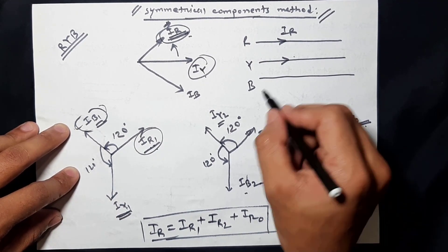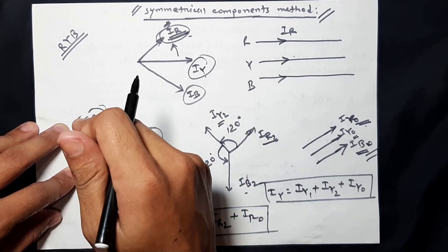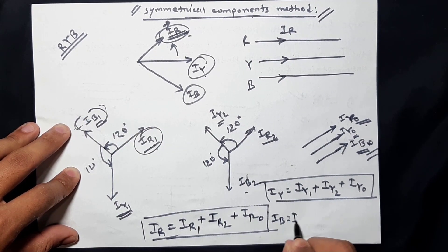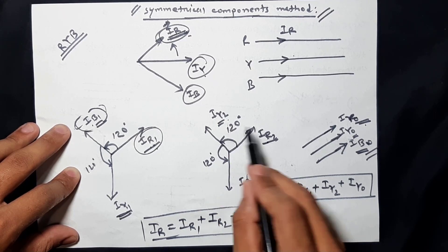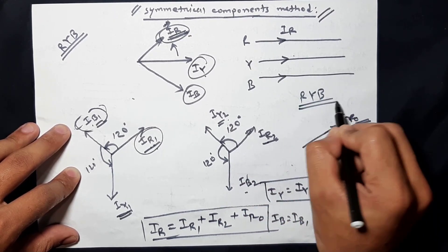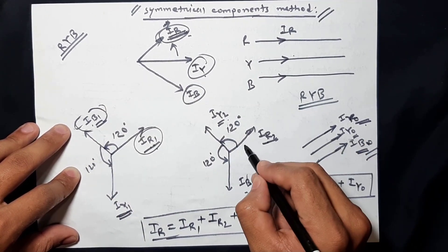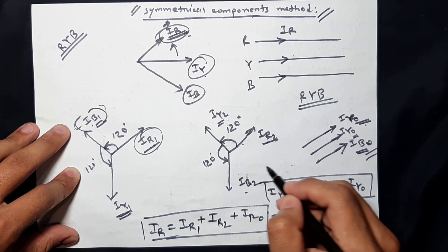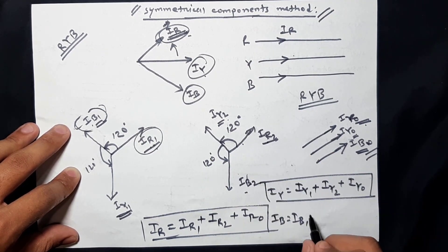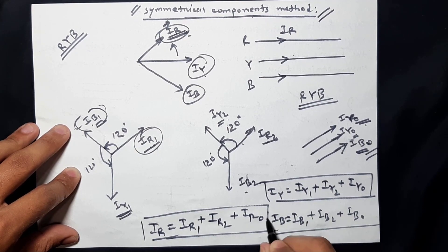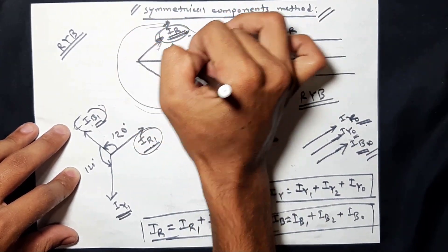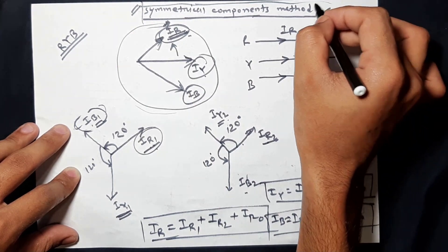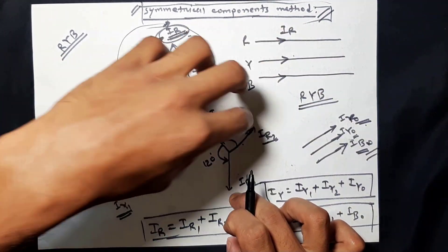For the blue phase, IB breaks into IB1 (positive sequence component), IB2 (negative sequence component), and IB0 (zero sequence component). This is our current method for the symmetrical component approach to unsymmetrical faults. The three currents decompose into positive, negative, and zero sequence components.